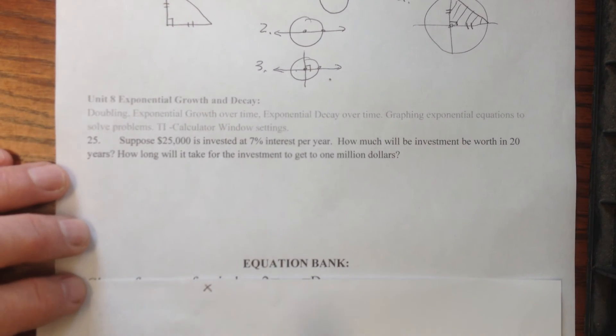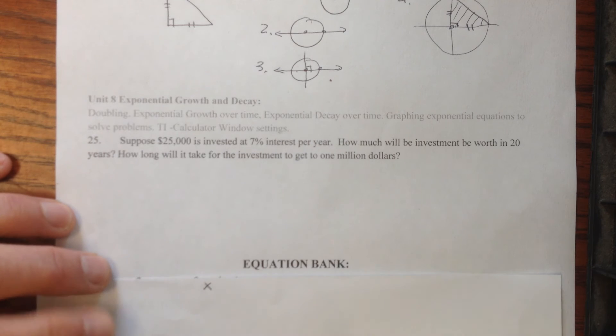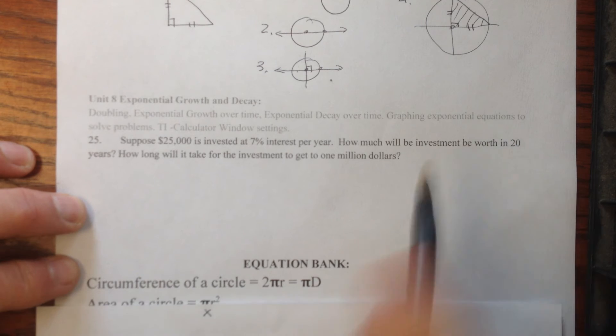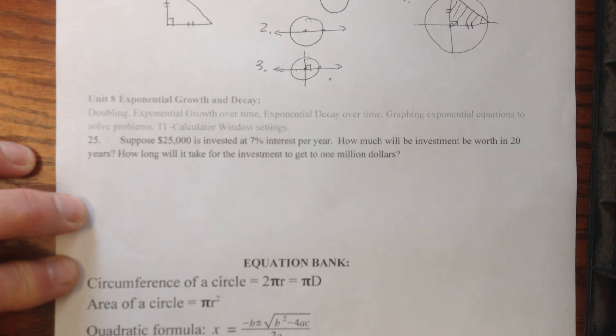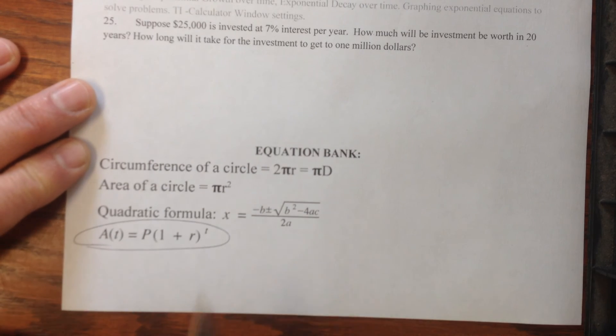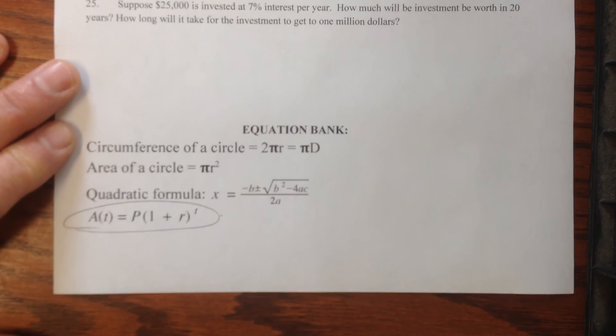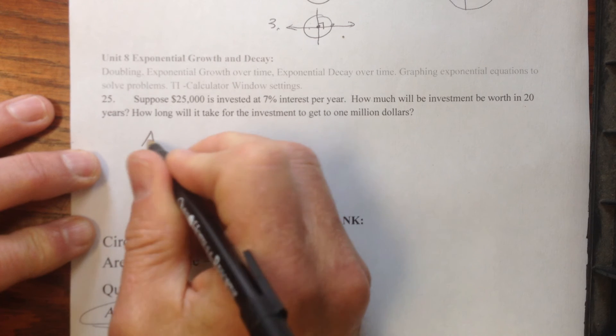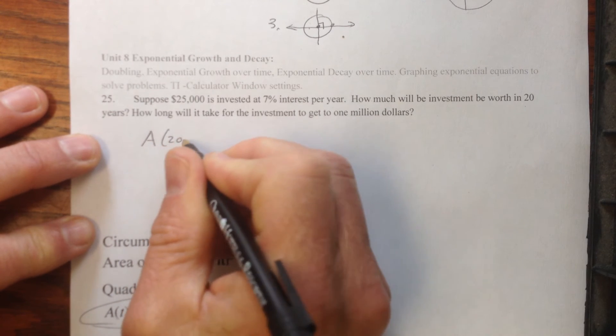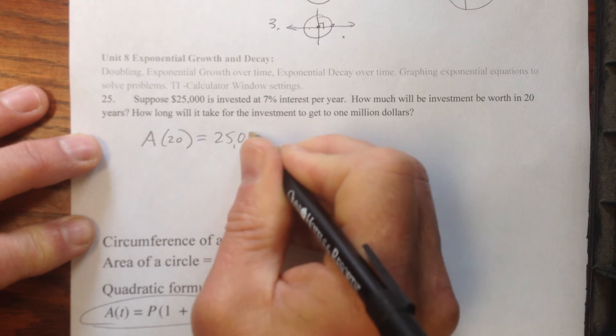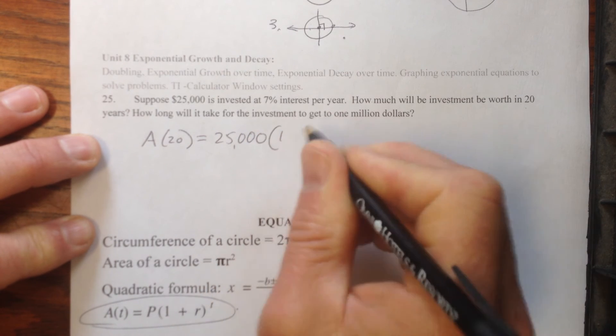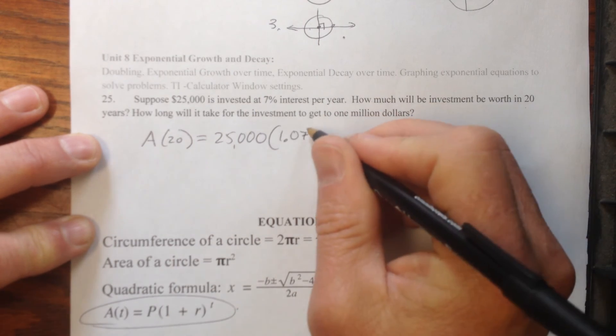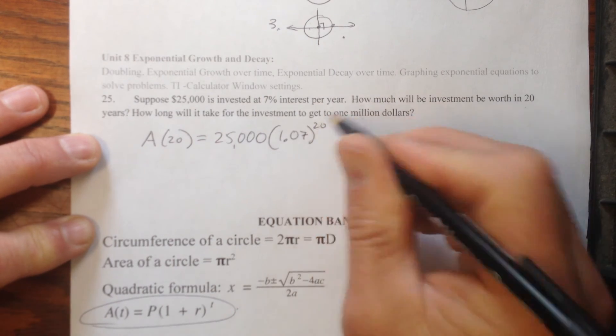Alright, exponential growth and decay, 25,000 is invested at 7% per year. How much will be in the account after 20 years? I'm going to use this equation down here, in our equation bank, so I'm going to write that right here, and so the amount after 20 years is going to be equal to 25,000 times 1.07, I know that the decimal equivalent of 7% is 07, and I add that, and that's raised to the 20th power.